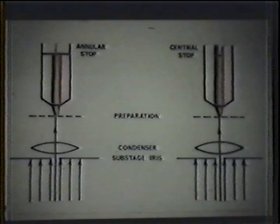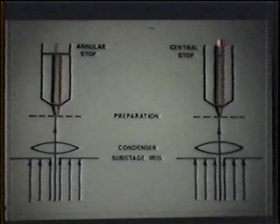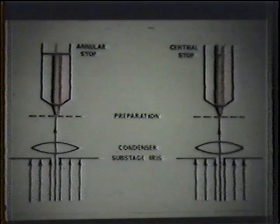We usually use a central stop, which gives us complementary colors. In other words, we have a small stop on the axis of the microscope that stops the lambda zero wavelength and its near neighbors, and the other wavelengths then pass around the stop and come to a focus in the body tube of the microscope where they produce a complementary color for the borders of the particle.